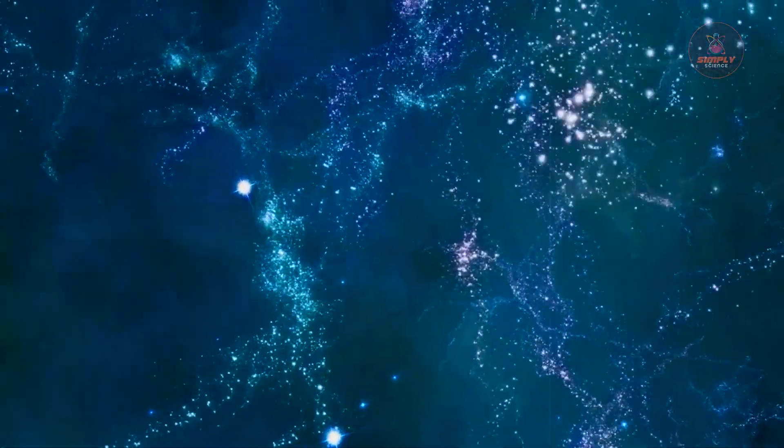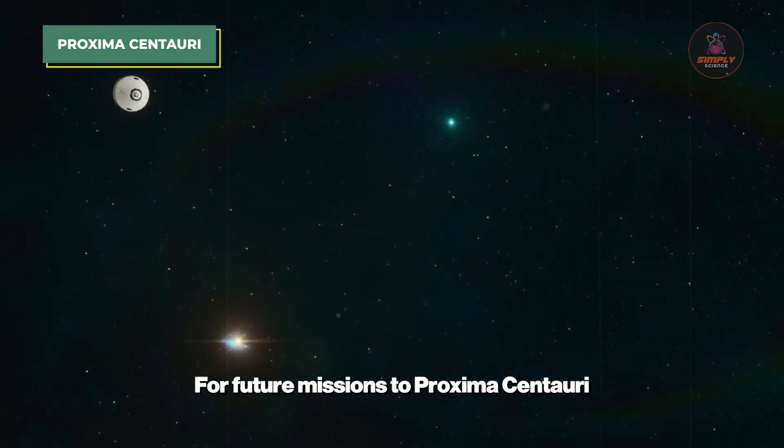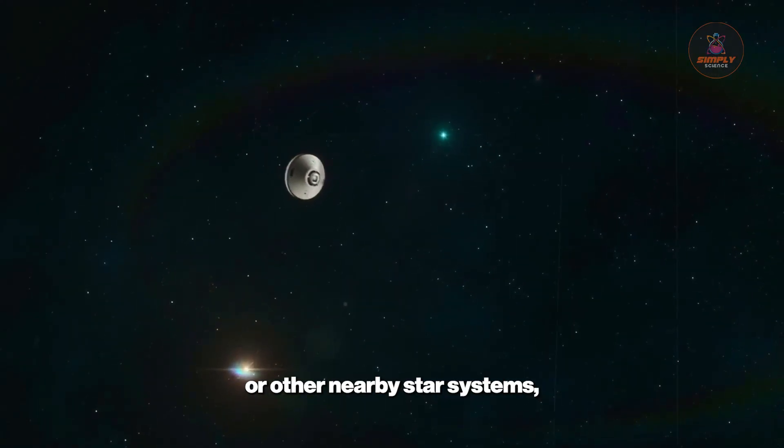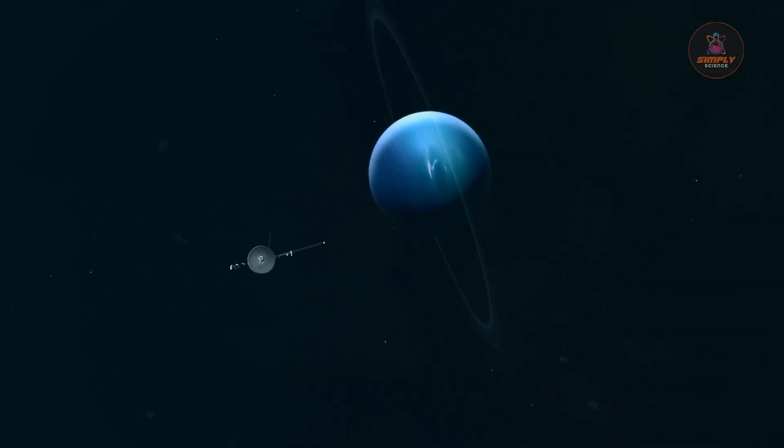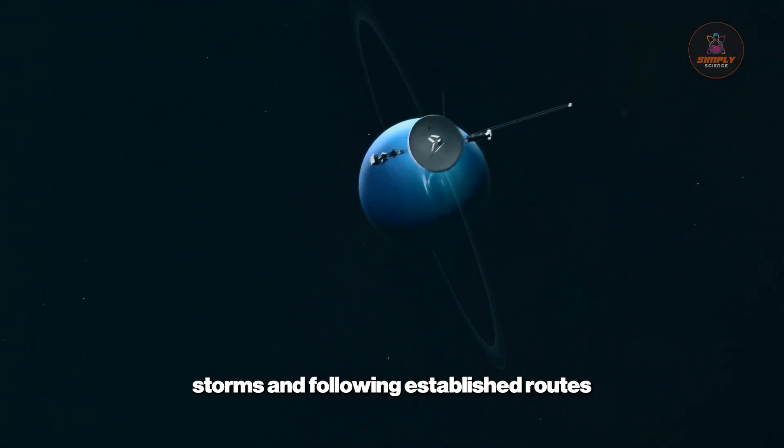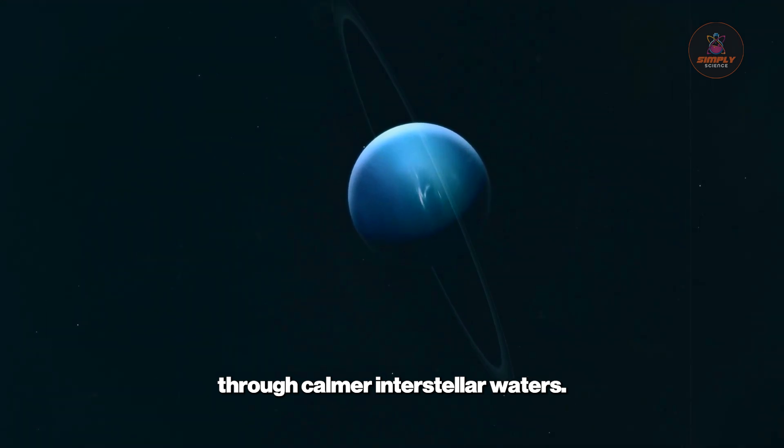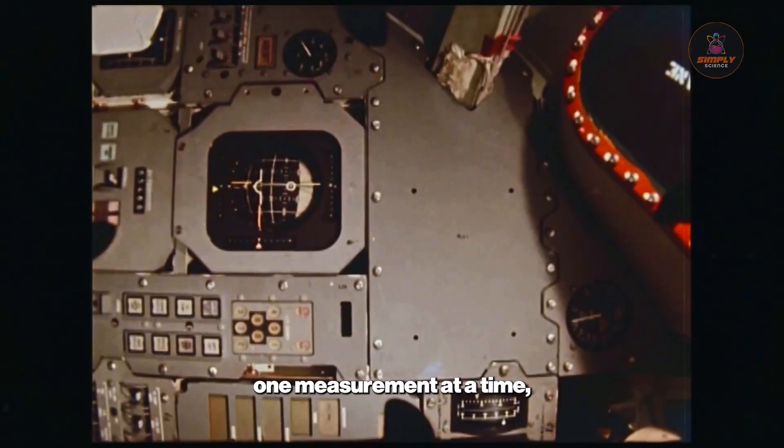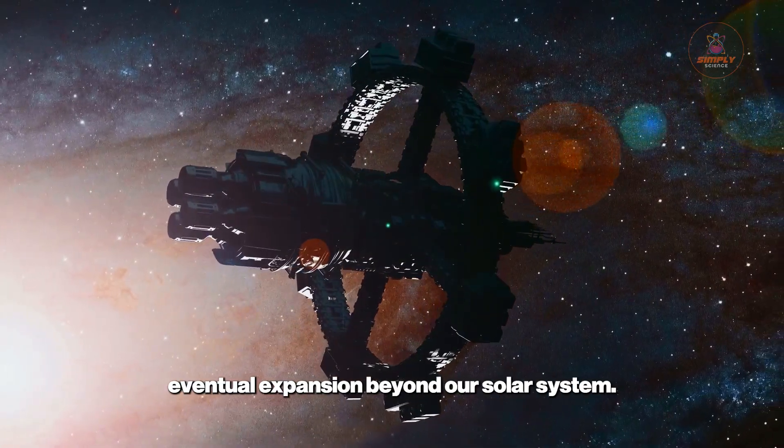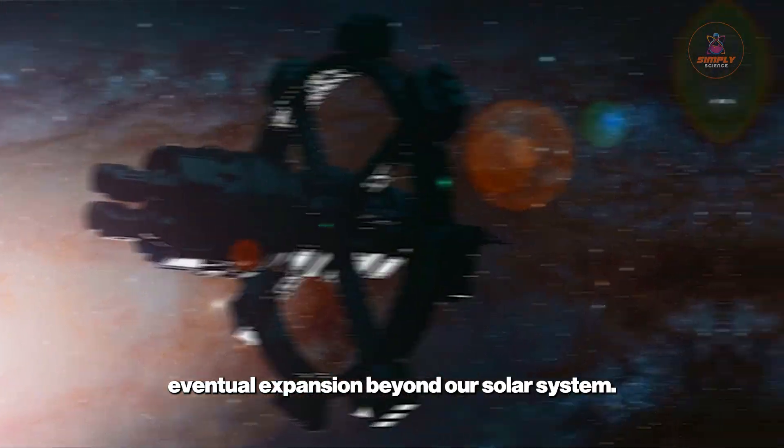For future missions to Proxima Centauri or other nearby star systems, Voyager's map will be the difference between wandering blind through cosmic storms and following established routes through calmer interstellar waters. We're not just exploring space anymore, we're charting it one measurement at a time.